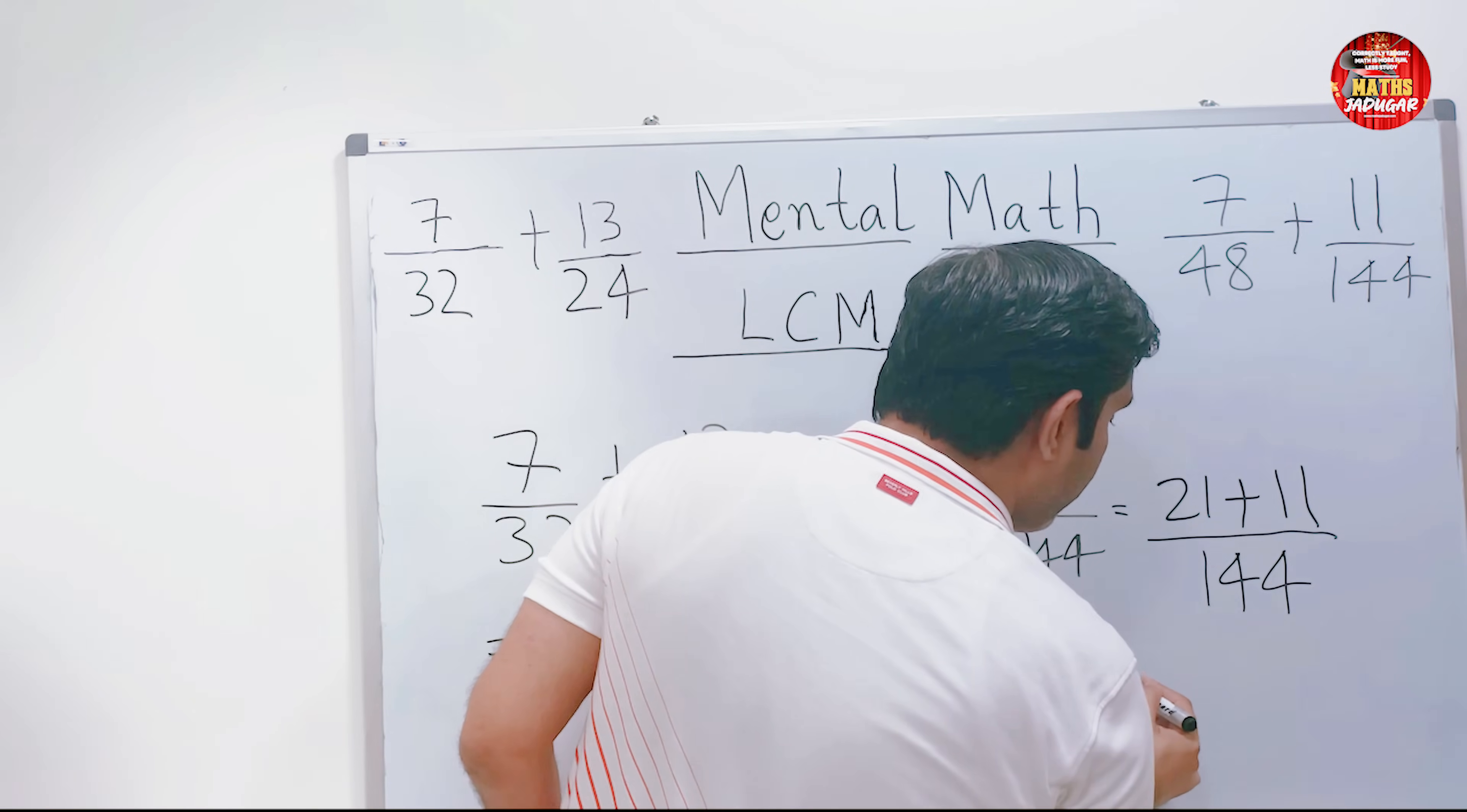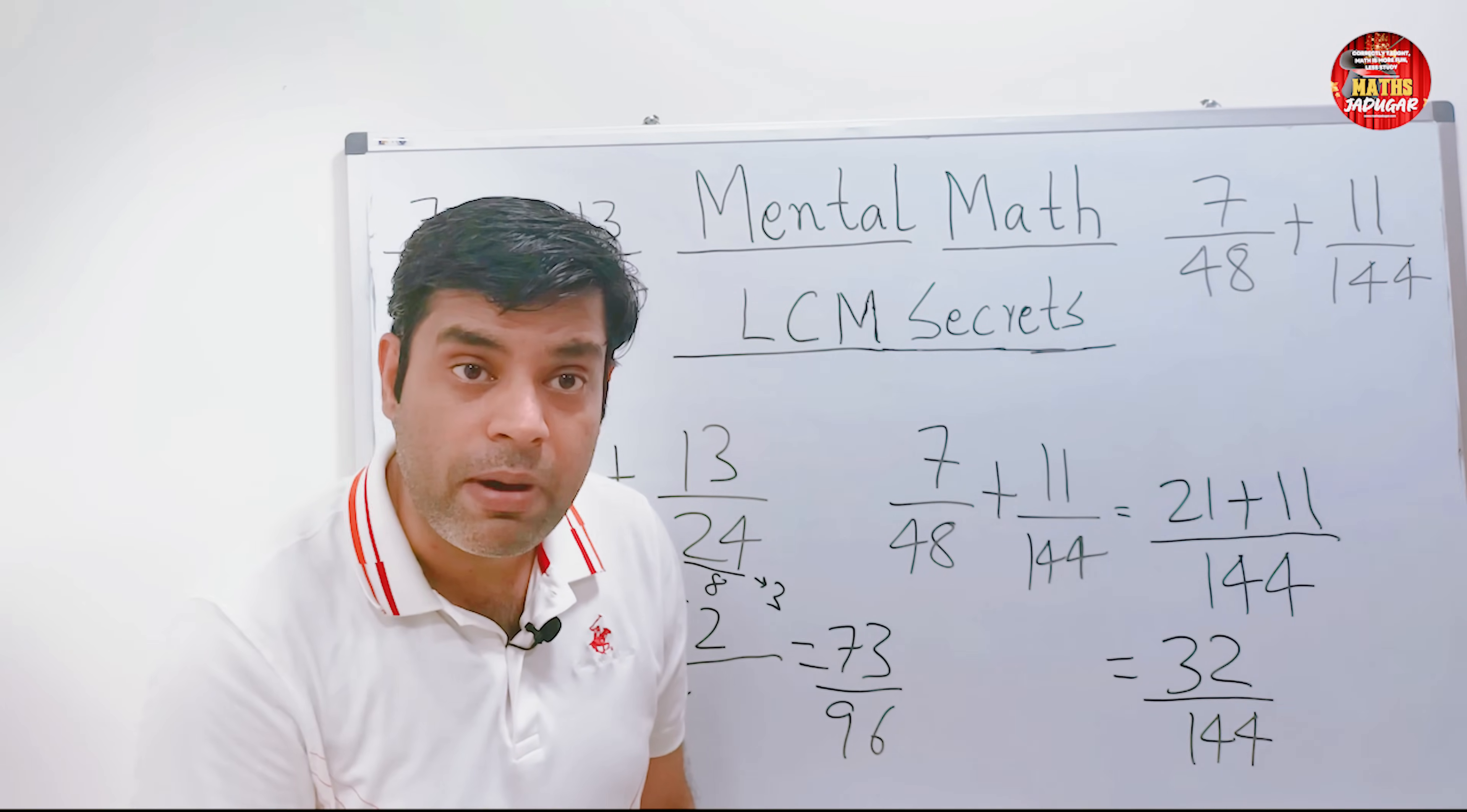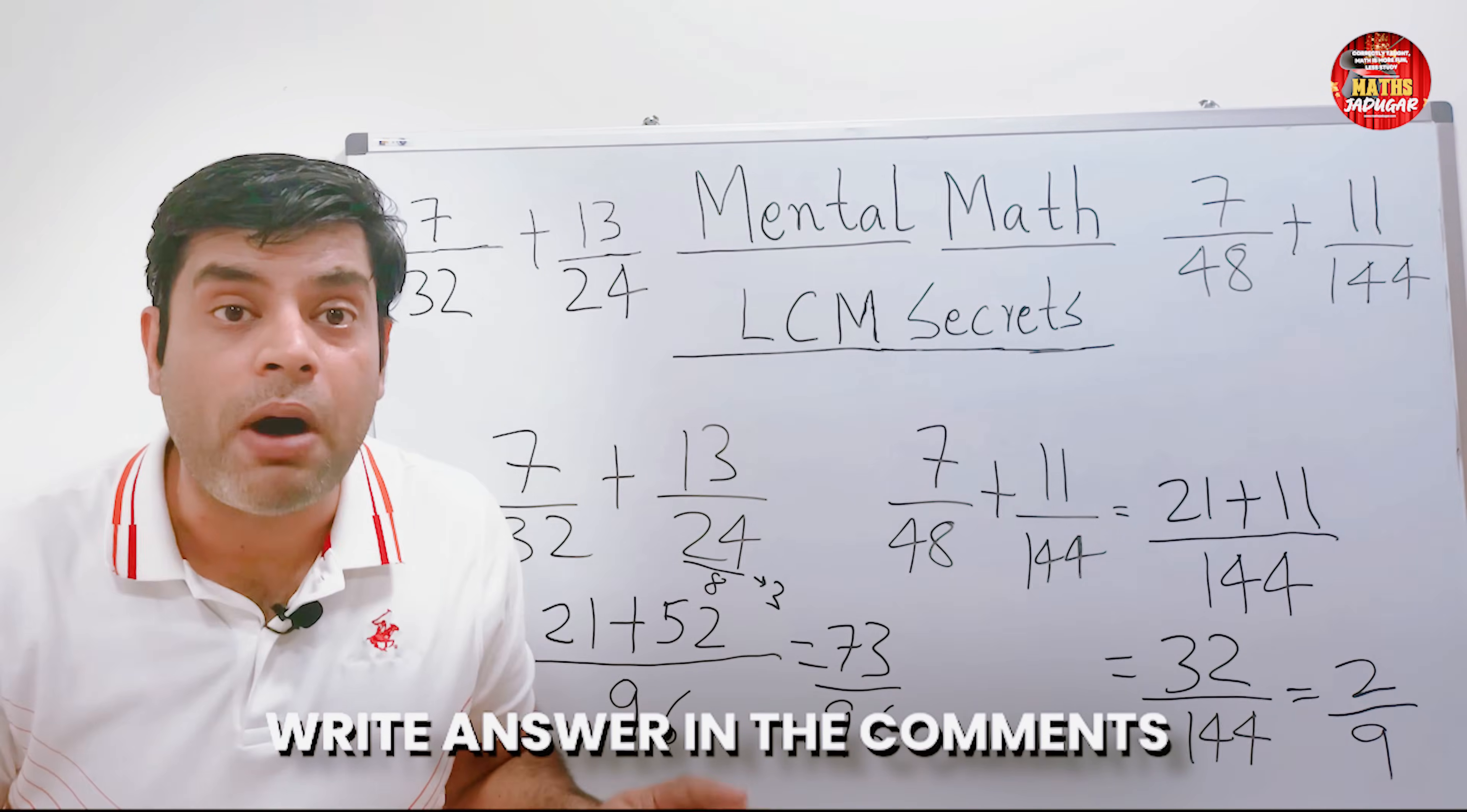Answer would be 32 by 144. Here I can see 16 is a common factor in these two. If you are good in multiplication and tables, you will identify it at a glance. So please practice it as much as possible. So 16 is a common factor. We'll divide 16 in numerator as well as denominator and we'll get a final answer which is 2 by 9.